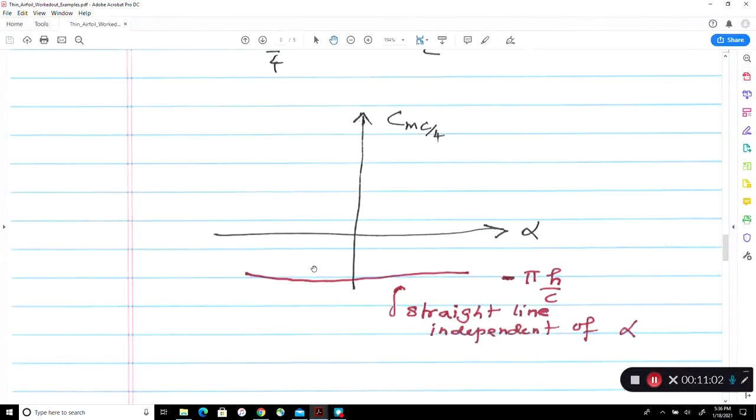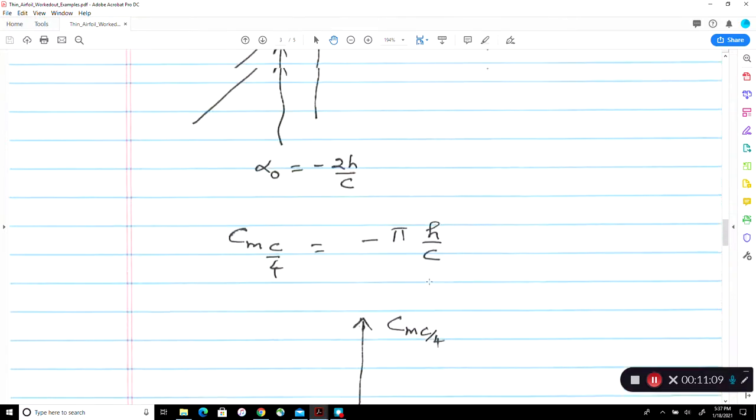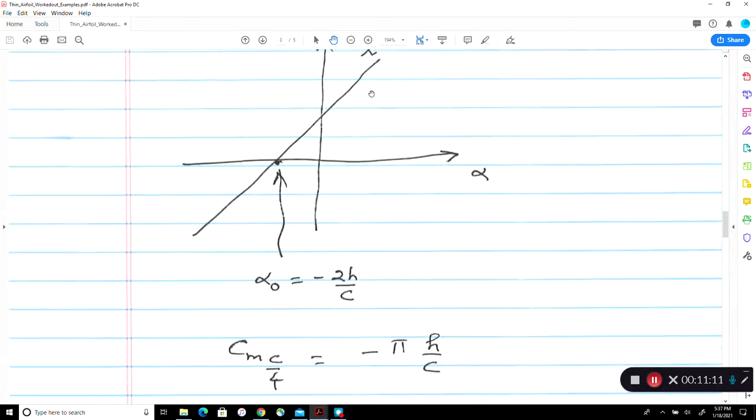So we are returning back to our worked out example. So for the cambered aerofoil, the pitching moment at the quarter chord is independent of alpha. The lift curve is, because it's a straight line, just as we saw in our previous Abbott and Doinhoff book.